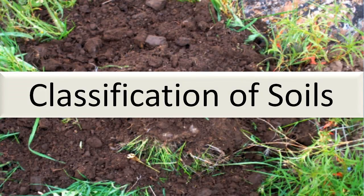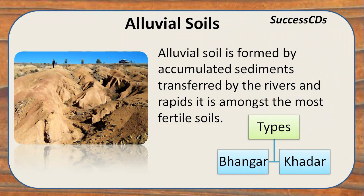India has different states with different climates and topographic features, so there is a huge variety of soil in India. The first type is alluvial soil — one of the most fertile soils, generally found around river banks and mainly in the northern plains. Minerals present in alluvial soil are potash, phosphoric acid, and lime. Ideal crops are sugarcane, wheat, cereals, and pulse crops. Alluvial soil is broadly classified into bhangar (old alluvial deposits) and khadar (new alluvial deposits).